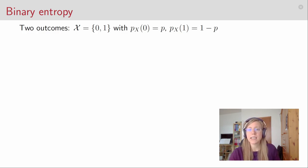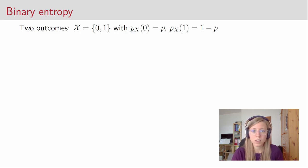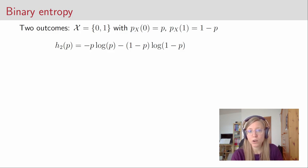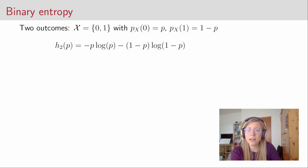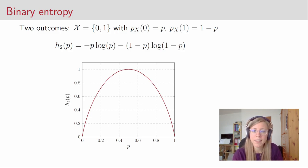Another interesting example of the entropy is the binary entropy. This is when you have an outcome set with only two outcomes, denoted 0 and 1, distributed such that 0 occurs with probability p and 1 occurs with probability 1 minus p, because they have to sum to 1. The binary entropy is then: minus p log p minus (1 minus p) log (1 minus p). This entropy occurs in so many cases that it got its own name and its own letter. If you plot this function as a function of the parameter p, then it looks as shown.